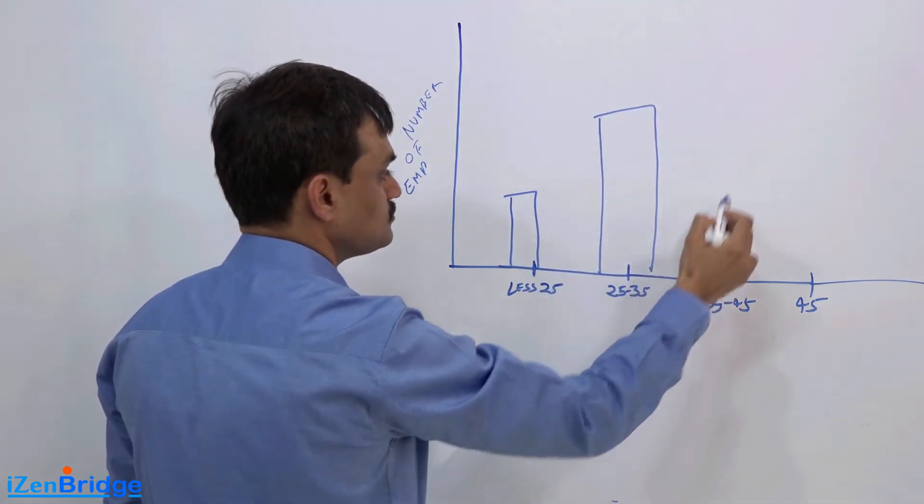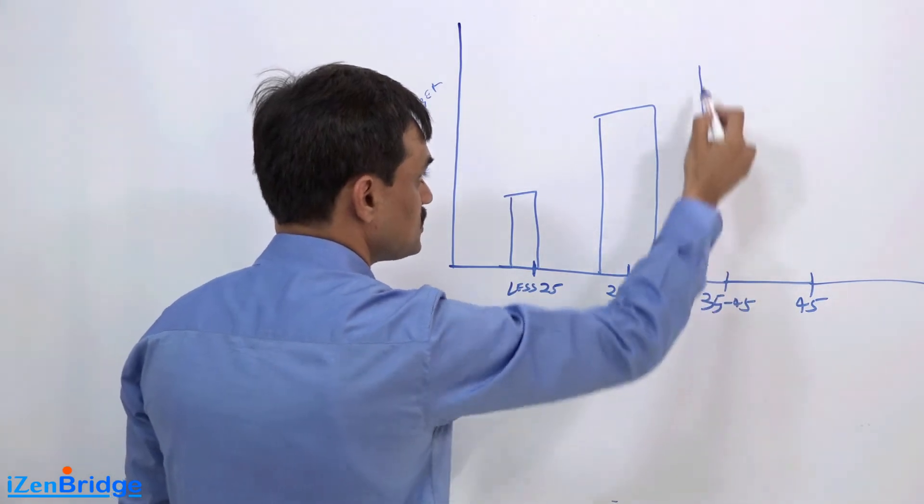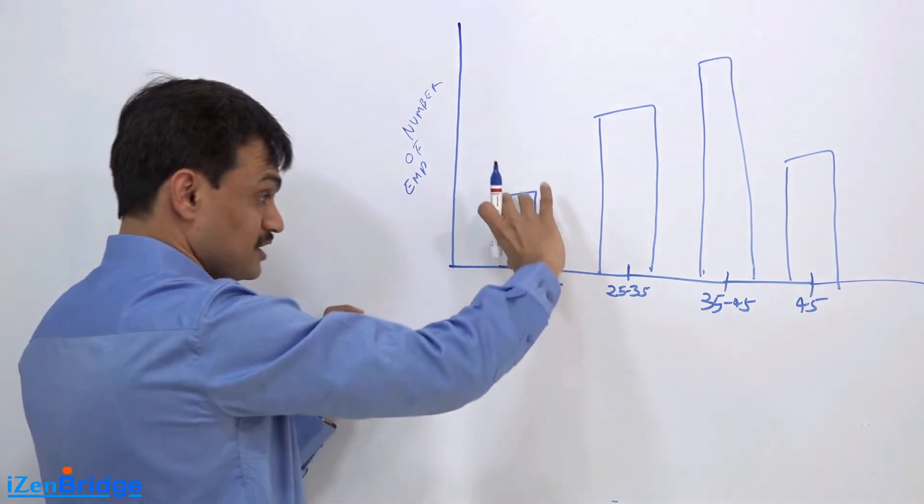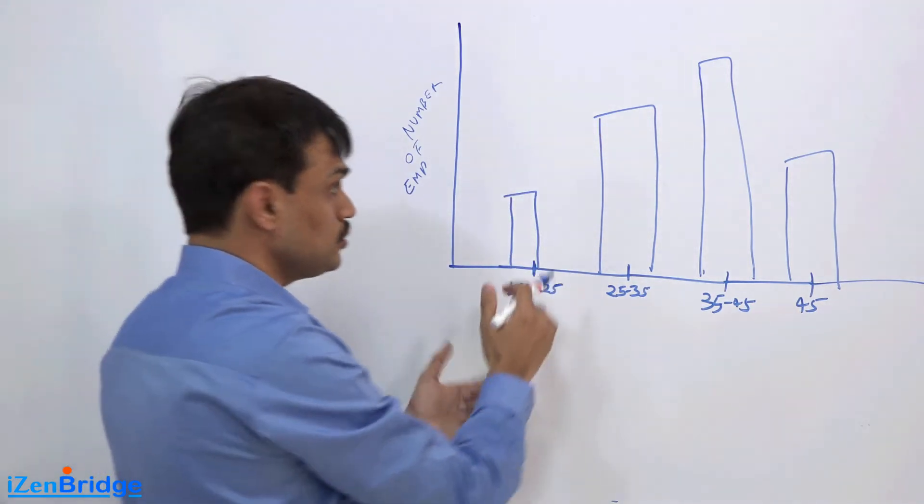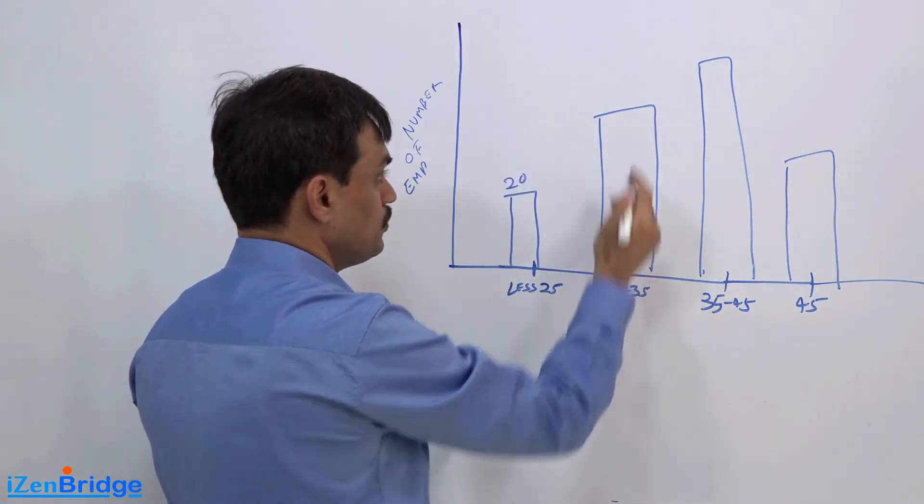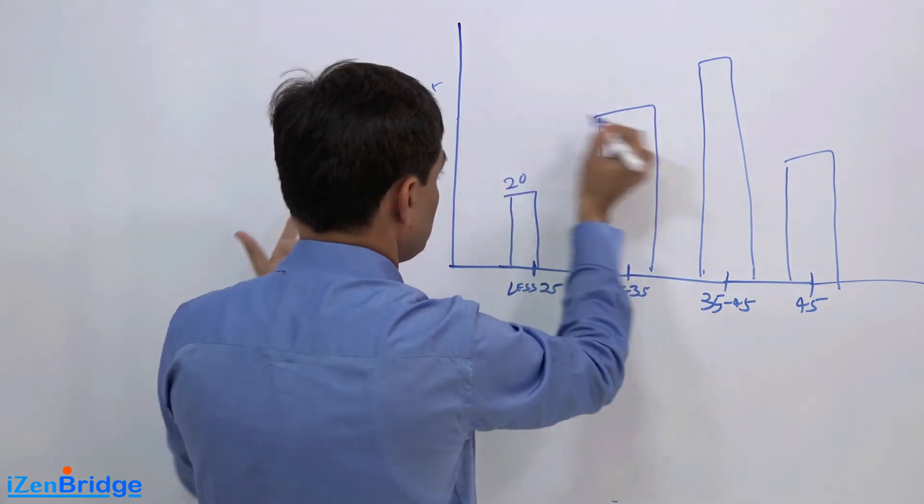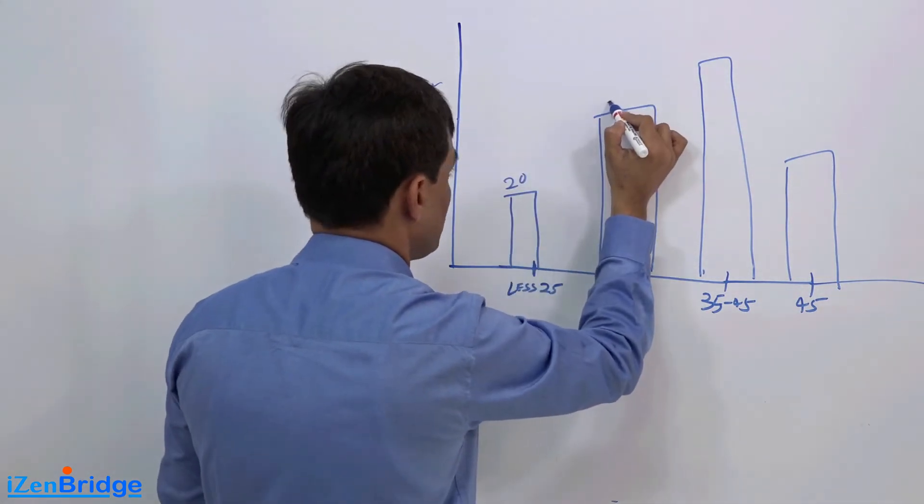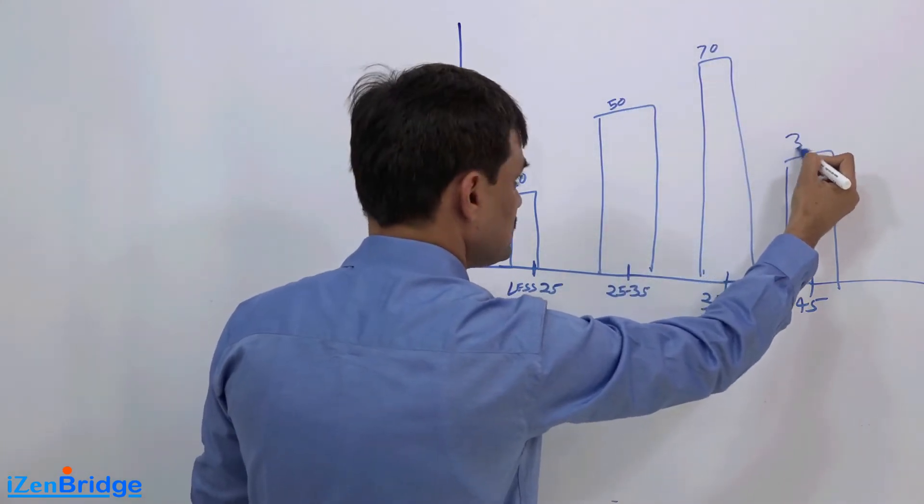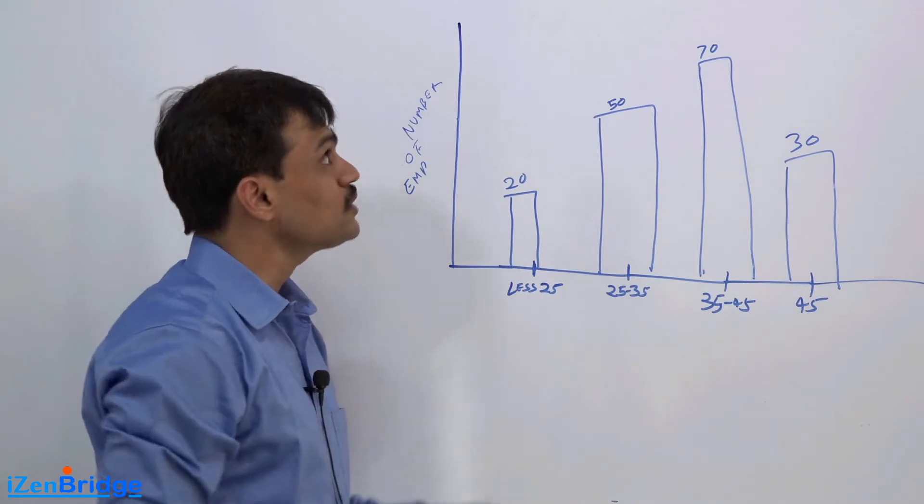It's not necessary for there to be any order where the first bar has to be big or something. You may have 20 here, you may have 50, you may have 70 here, 30 here, something like this. Anything which can be presented in the form of a bar chart is your histogram.